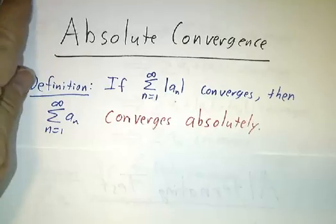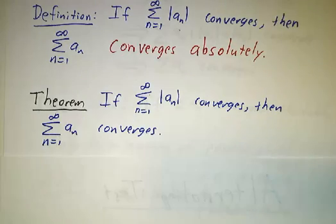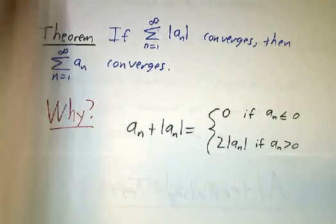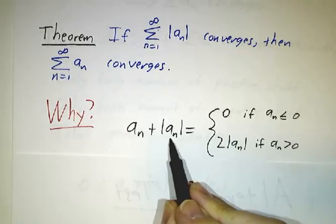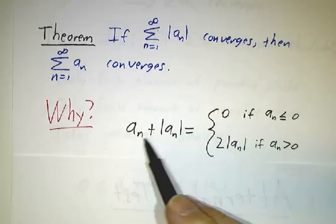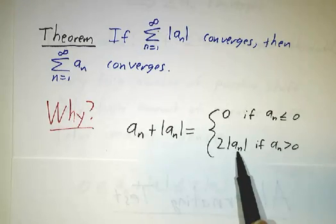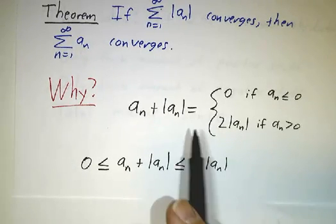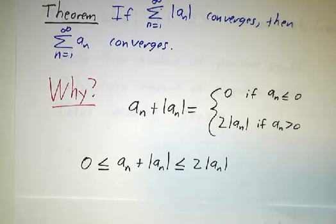The big deal about absolute convergence is that if it converges absolutely, then it converges. The reason for that is you look at just the positive part of the numbers. If you look at an plus the absolute value of an — well, if an is negative, then that adds up to 0. If an is positive, you get twice the absolute value.